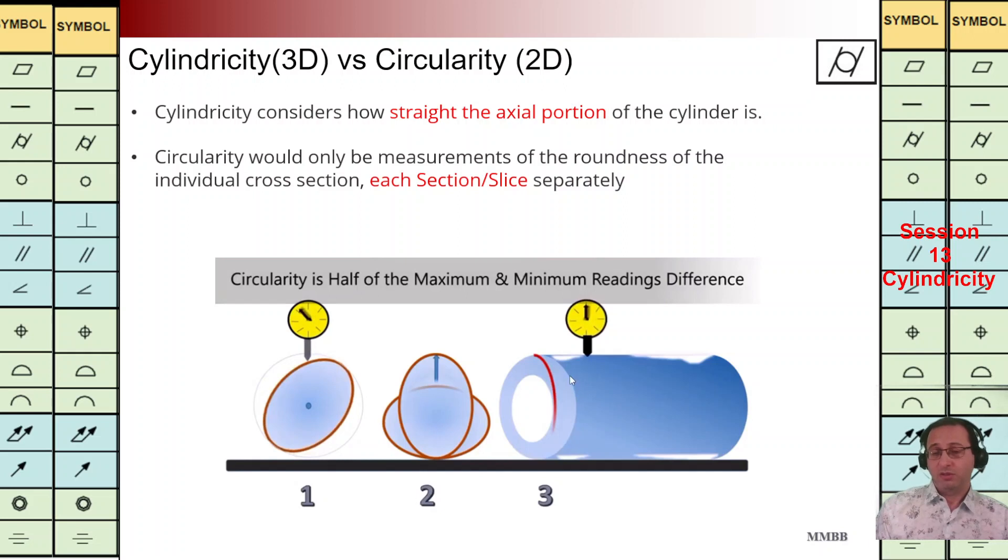The component is going to rotate and the indicator is going to move along the axis to measure the cylindricity.